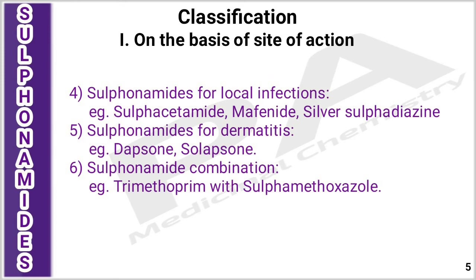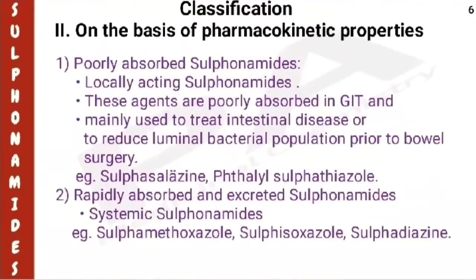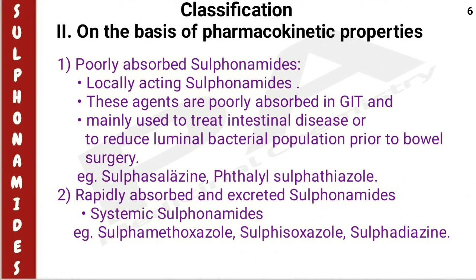Sulfonamides are also classified on the basis of pharmacokinetic properties into three types. The first type is poorly absorbed sulfonamides, otherwise called locally acting sulfonamides. These are poorly absorbed in the GIT and mainly used to treat intestinal disease or reduce luminal bacterial population prior to bowel surgery. Examples are sulfasalazine and thalylsulfathiazole. The second type is rapidly absorbed and excreted sulfonamides, otherwise called systemic sulfonamides — examples are sulfamethoxazole, sulfisoxazole, and sulfadiazine.